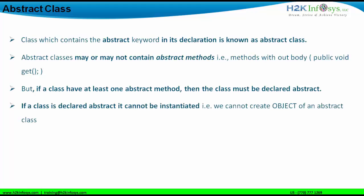The next point is that if a class is declared abstract, it cannot be instantiated — you cannot create an object of an abstract class. Because you cannot create an object, you cannot use the non-static variables and non-static methods present in an abstract class, nor can you use the main method in which you would create an object.